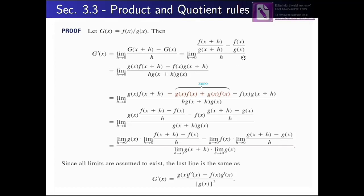We multiply the first fraction by g(x)/g(x) and the second by g(x+h)/g(x+h) to get a common denominator. This gives us g(x)·f(x+h) minus f(x)·g(x+h), all divided by h·g(x+h)·g(x).